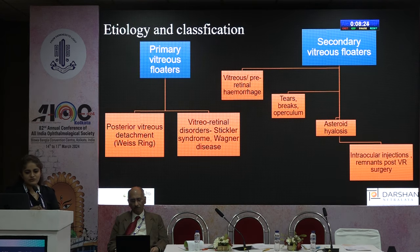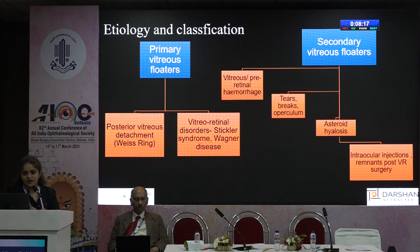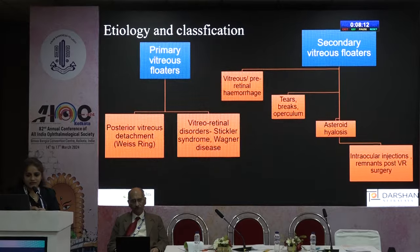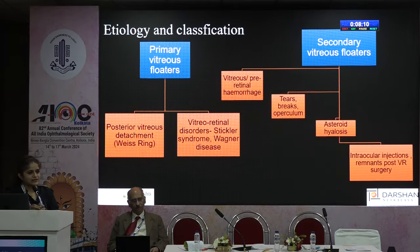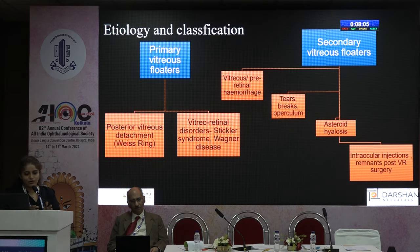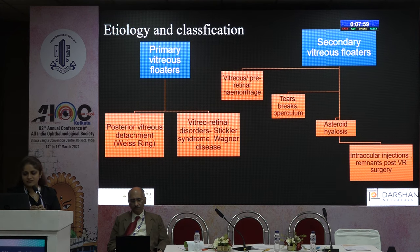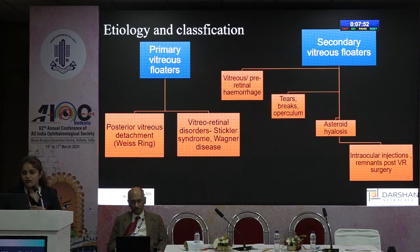The most common cause of primary vitreous floaters is posterior vitreous detachment, where the patient may complain of seeing a Weiss ring or ring-like floater. There could also be vitreoretinal disorders like Stickler syndrome or Wagner disease. Secondary vitreous floaters can occur due to retinal, pre-retinal, or vitreous hemorrhages; breaks, tears or operculum in the retina with or without retinal detachment; or rarely asteroid hyalosis dense enough to cause floaters.